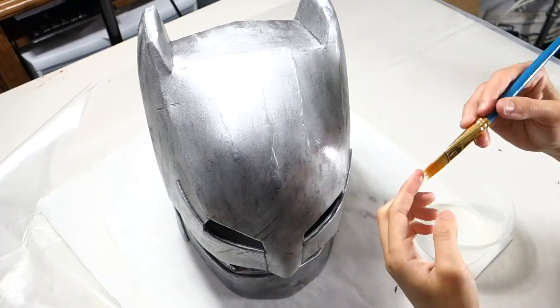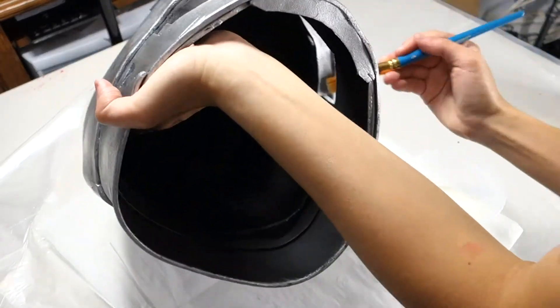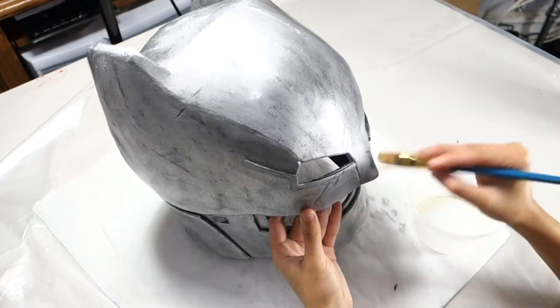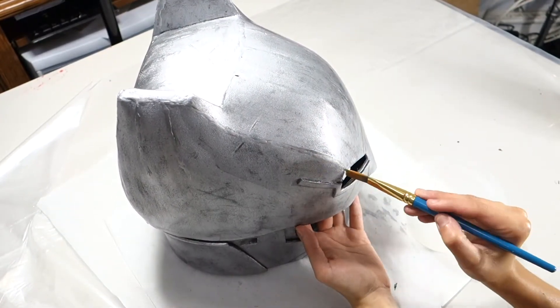To seal the paint, take some pledged floor cleaner and apply one light layer to the entire helmet. Sometimes too much floor cleaner could produce bubbles, so make sure you brush them away so that they don't dry on.